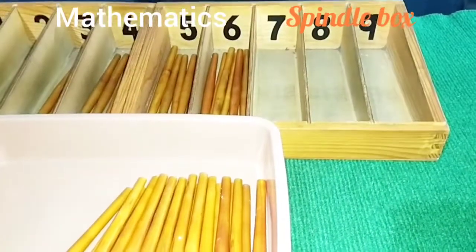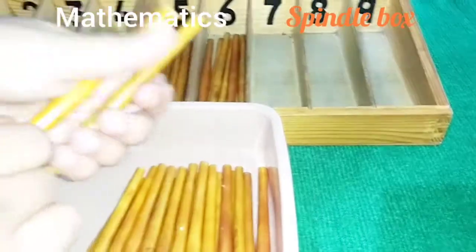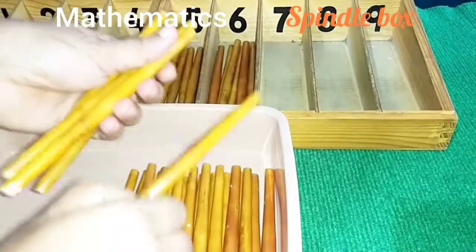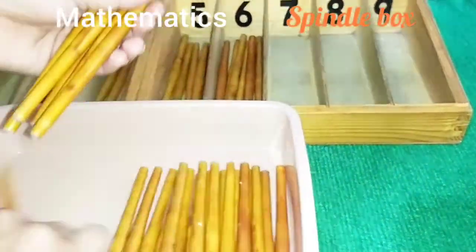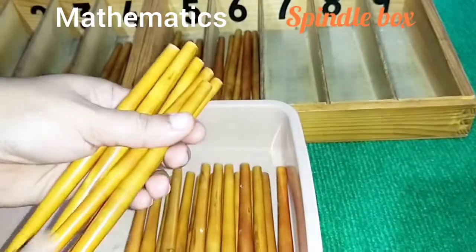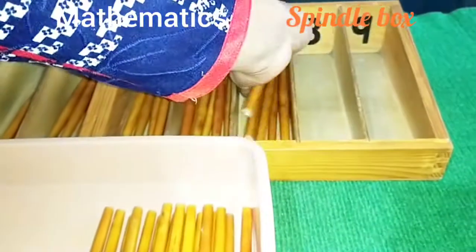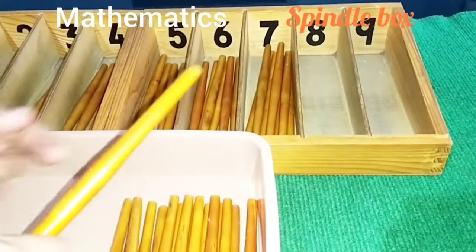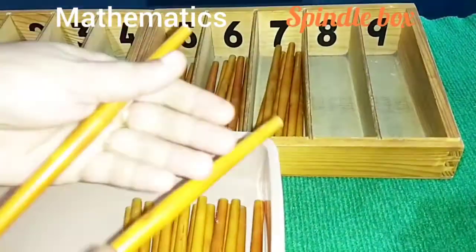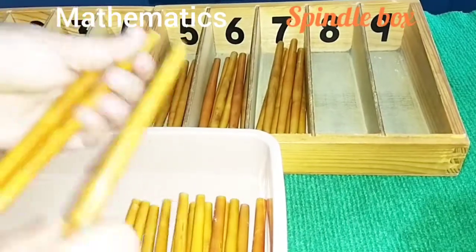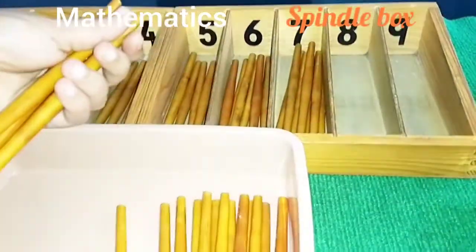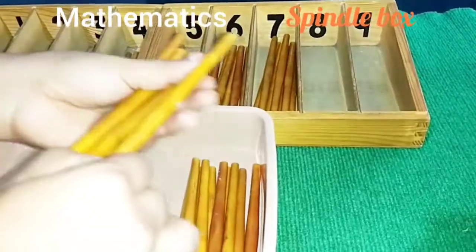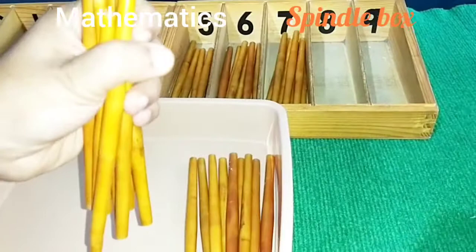This is seven. One, two, three, four, five, six, seven. Next number is eight. Take eight spindles. One, two, three, four, five, six, seven, eight. Eight spindles.